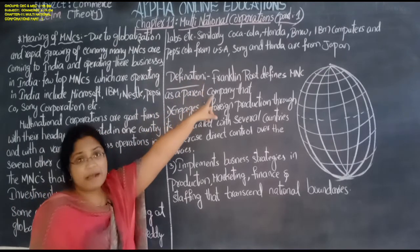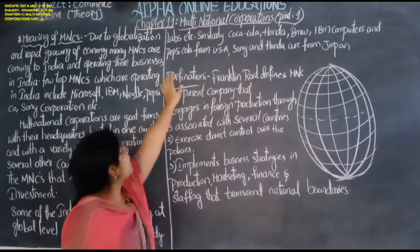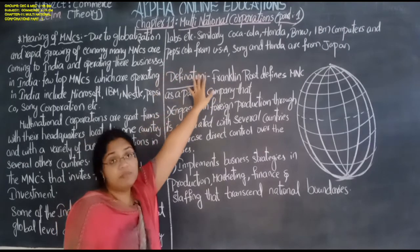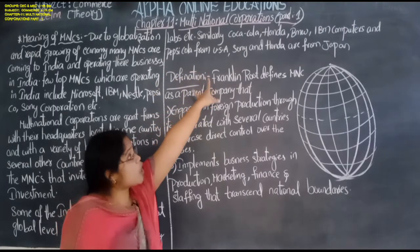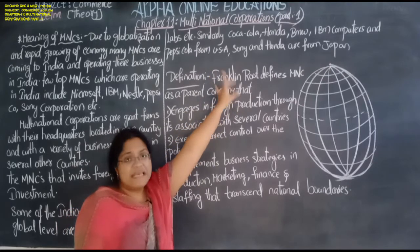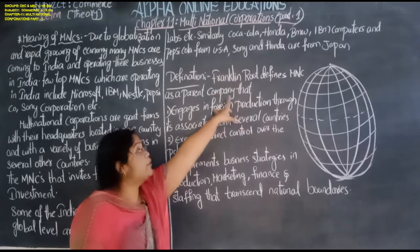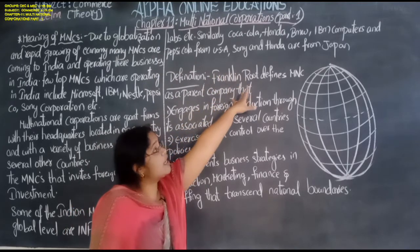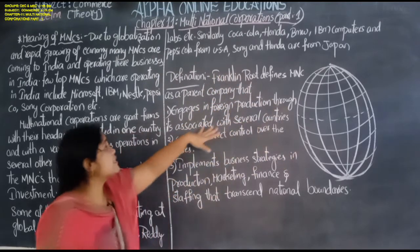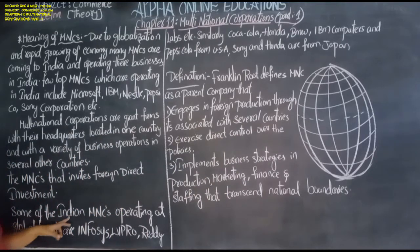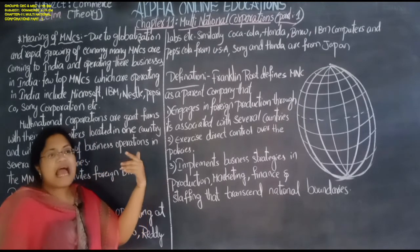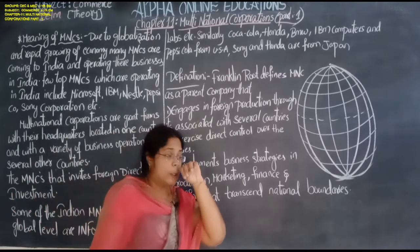Similarly, Coca-Cola, Honda, BMW, IBM Computer, and Pepsi-Cola are from the US. Sony and Honda are from Japan. Indian companies such as Infosys, Wipro, and Dr. Reddy's have their headquarters in India but are carrying on their operations all over the globe.